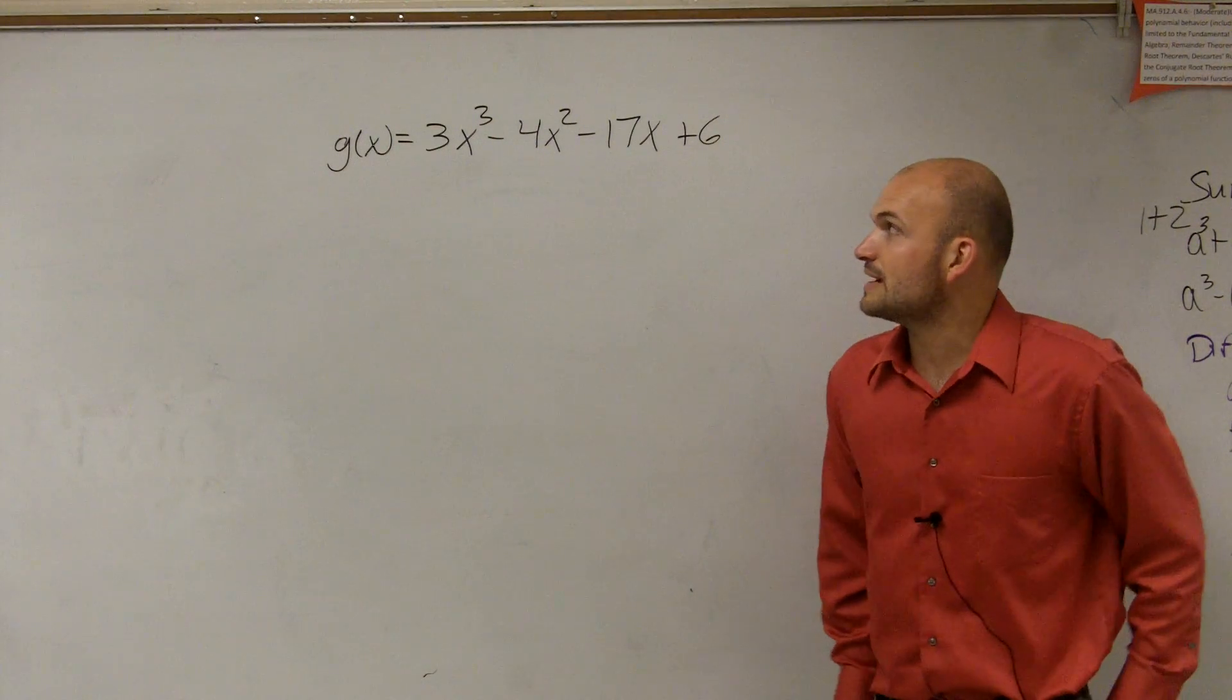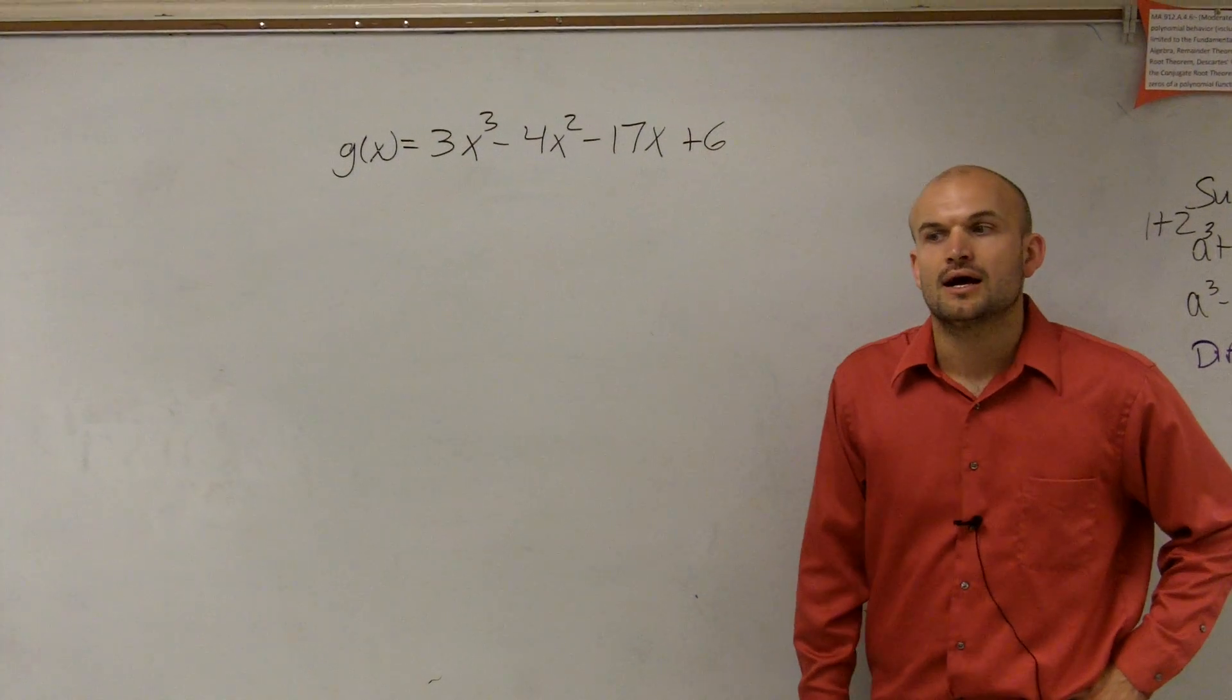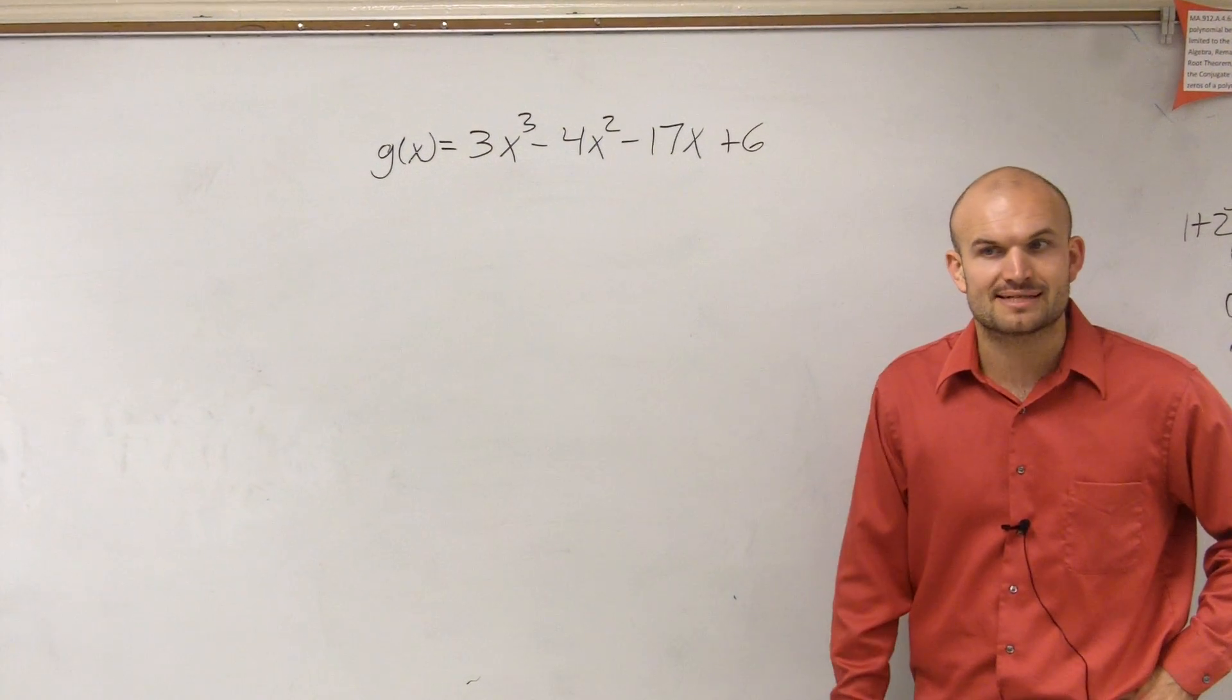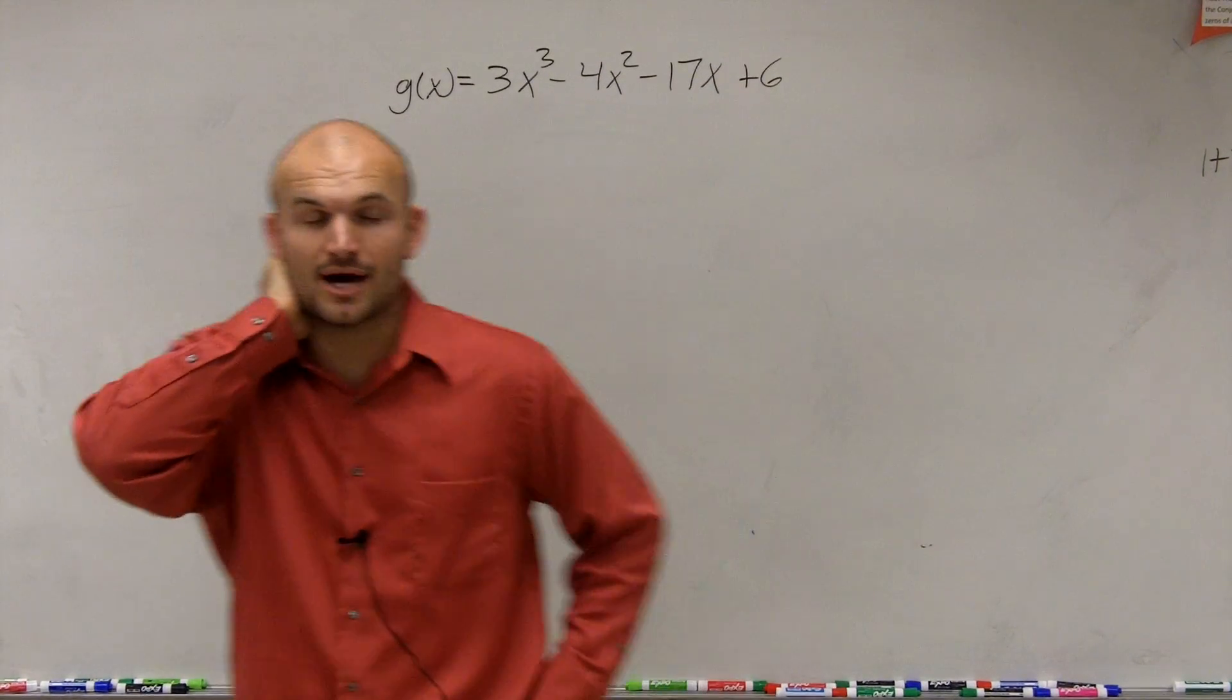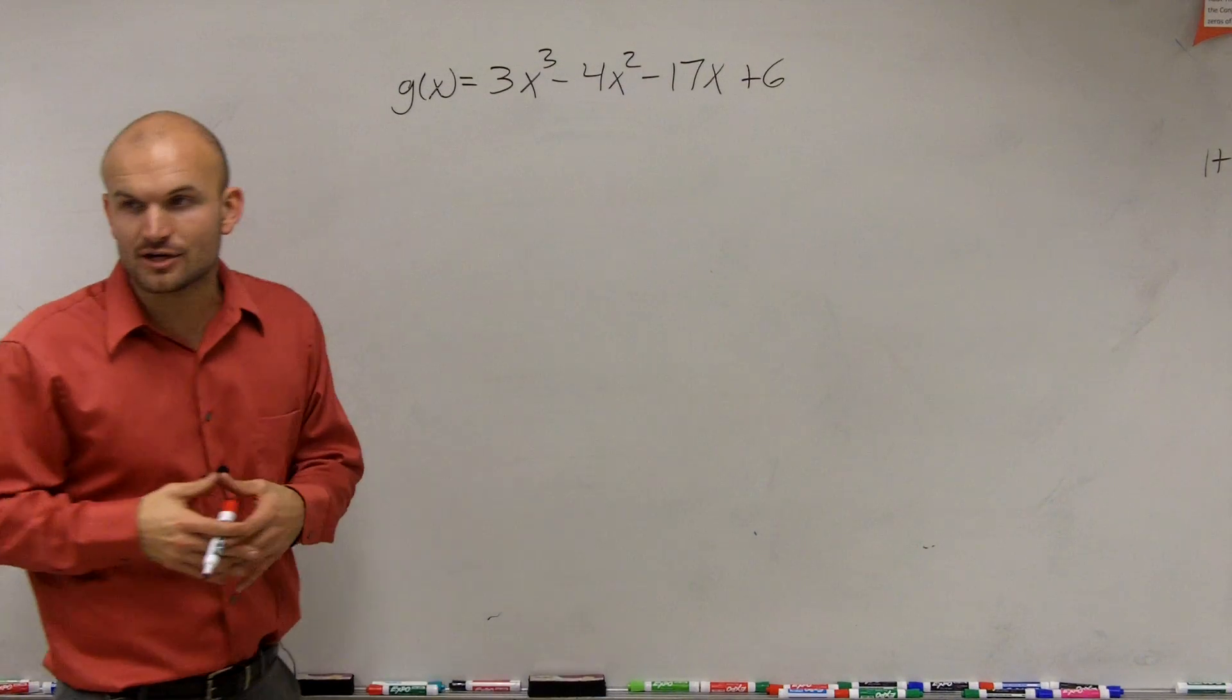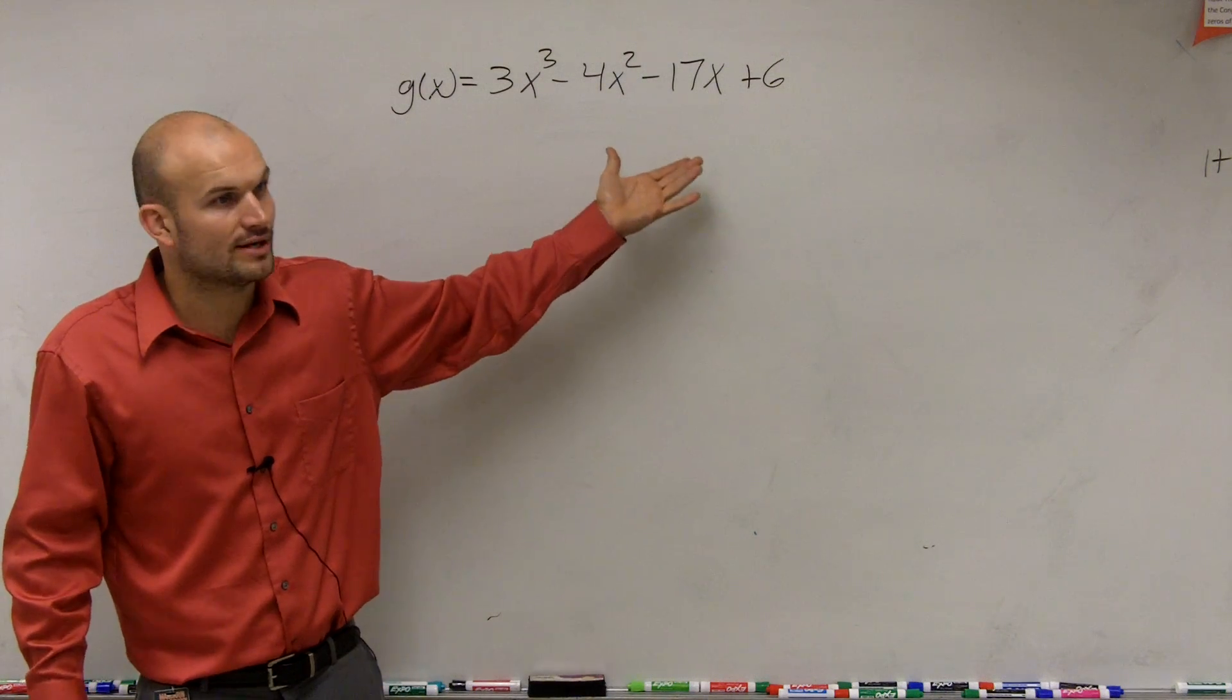So here we have g(x) equals 3x cubed minus 4x squared minus 17x plus 6. Alright, so what I'm going to do, ladies and gentlemen, this is going to be in your new parts that you're going to want to write down. And what we're going to be working on is trying to find the zeros. Now, before, what I said was when we wanted to find all the zeros, we had to work on factoring this, right, or somehow solving it.